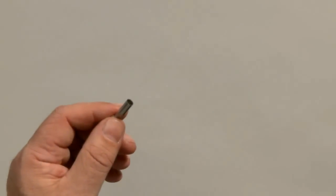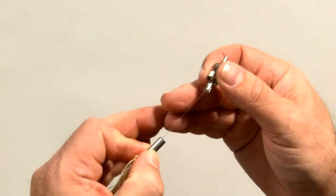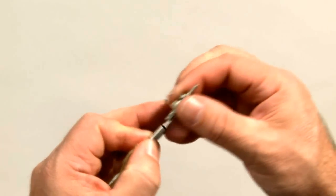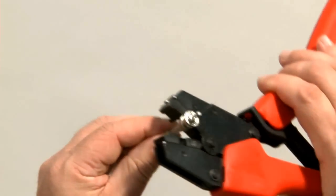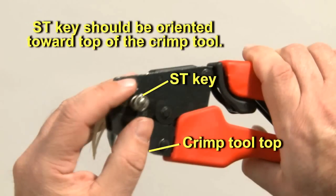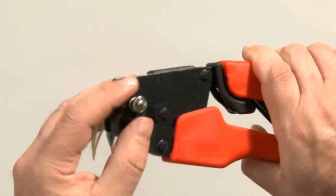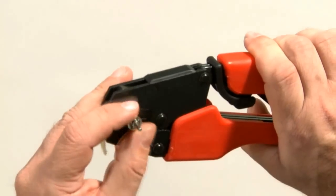Feed the fiber through the connector ferrule. Slide the ferrule down into the crimp sleeve. Crimp the ferrule by positioning it in the crimp tool so that the ST connector key is facing toward the top of the crimp tool. Squeeze the crimp tool handles to affix the connector ferrule.